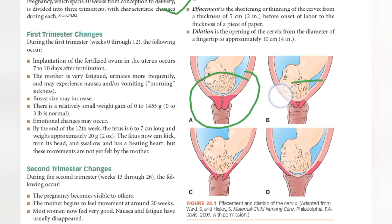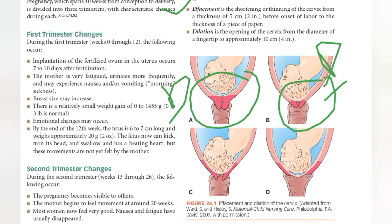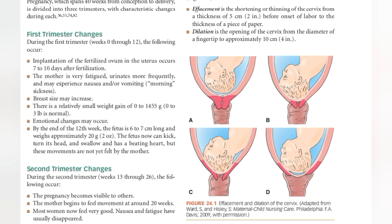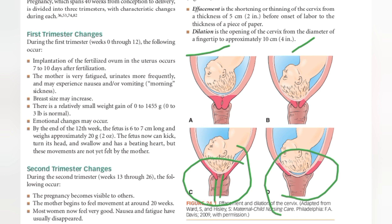In this image, you can see the shortening — the length and thickness are greater before labor, and shorter and thinner during labor. Next is dilation. Dilation is the opening of the cervix from the diameter of a fingertip to approximately 10 centimeters, or four inches, during labor. You can see this in the diagram showing before and during labor.